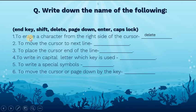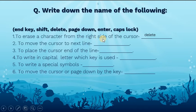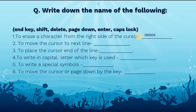To erase a character from the left side, we use the backspace key. But if we want to erase a character from the right side of the cursor, we use the delete key. Both backspace and delete are used for erasing characters, but in two different directions. The blinking line you see on the program screen is called a cursor.